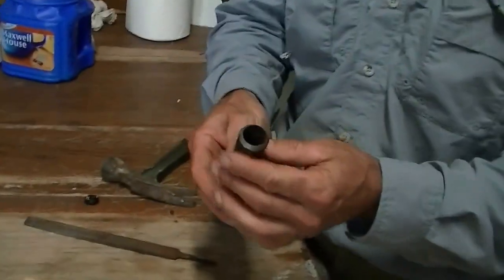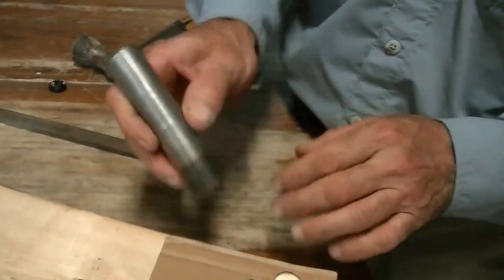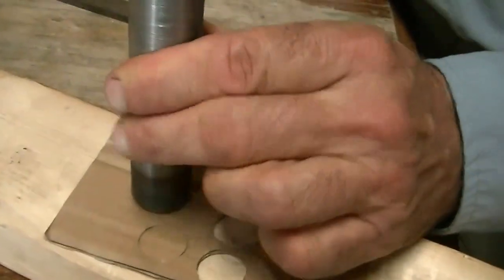This is a hole punch I made in my lathe. It's roughly three-quarters of an inch, size of the penny. Let's put it on there and hit it.